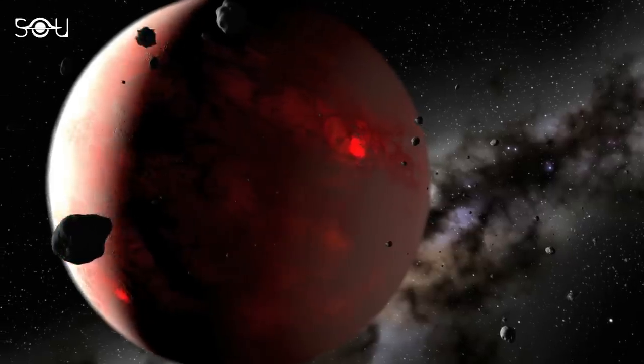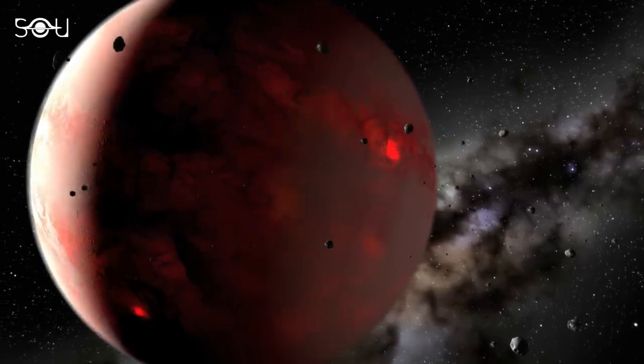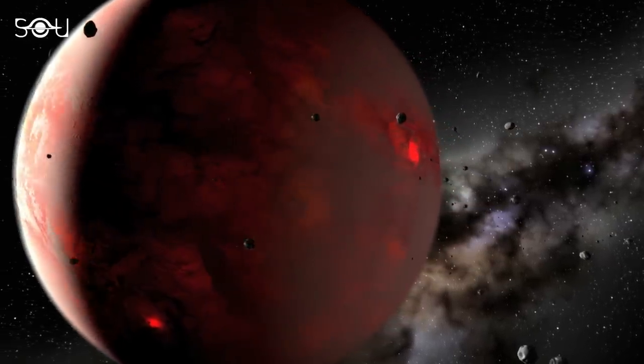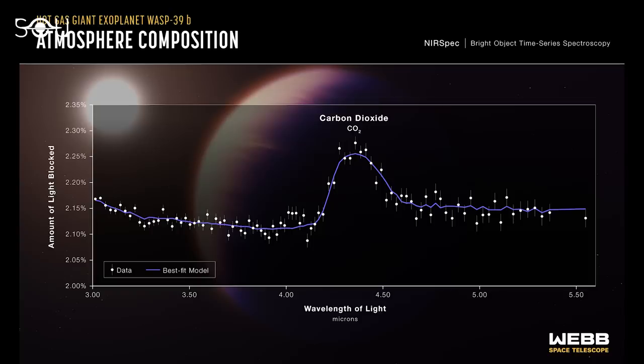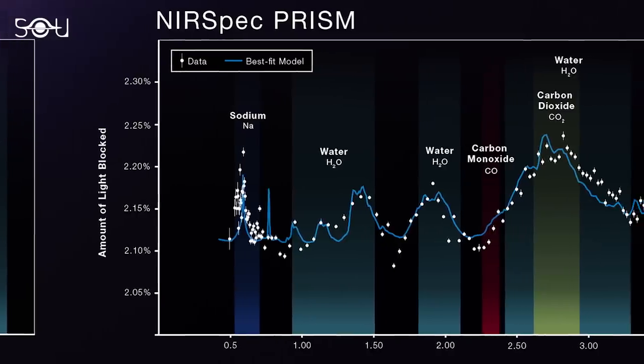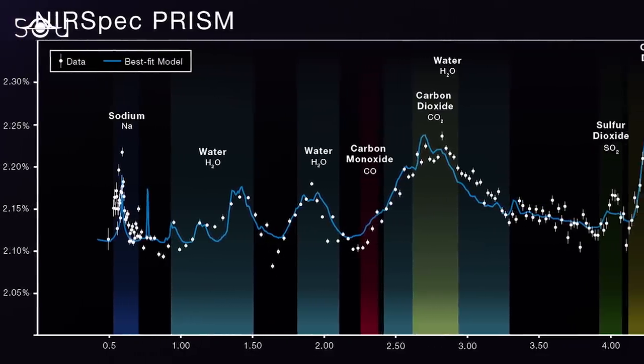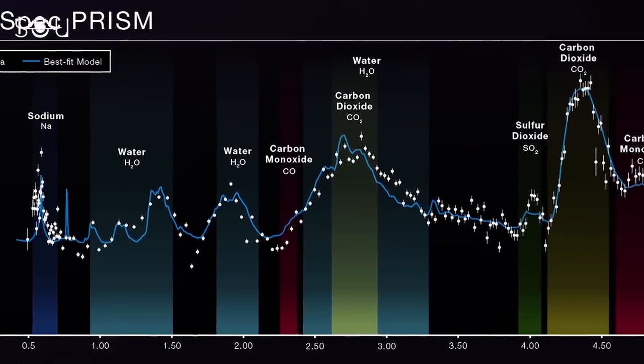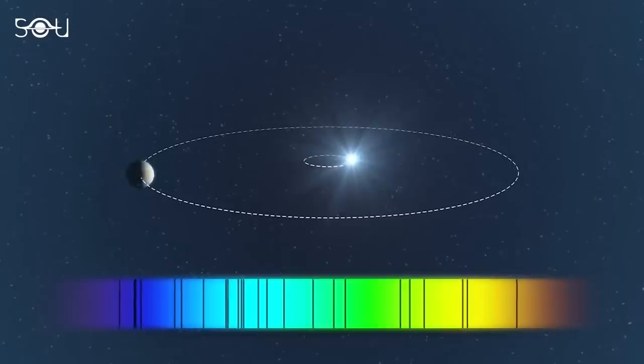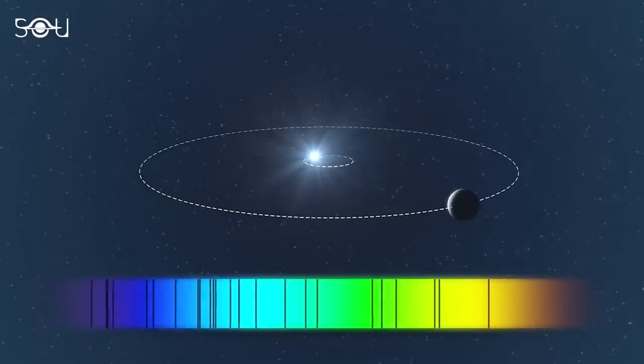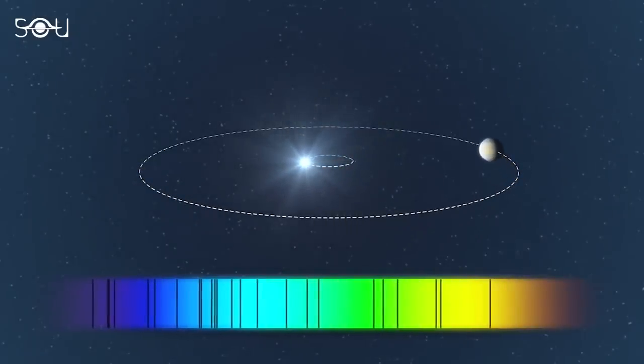The most exciting spectrum revealed by Webb was of a hot Jupiter planet named WASP-39b. It lies about 700 light-years away, and Webb discovered carbon dioxide in its atmosphere, the first detection of the gas in the atmosphere of any exoplanet. In addition, the telescope also detected carbon monoxide, potassium, sodium, sulfur dioxide, and water vapor in its atmosphere. The findings were described as the most detailed analysis of an exoplanet's atmosphere yet.